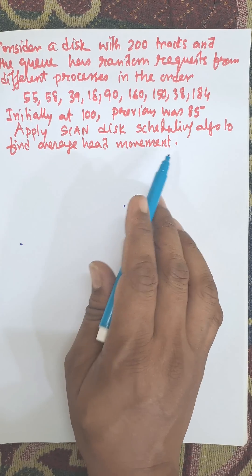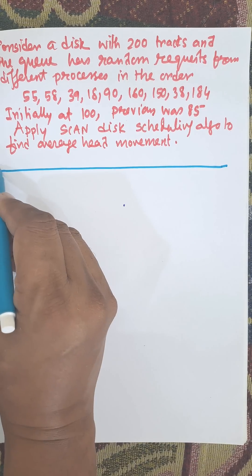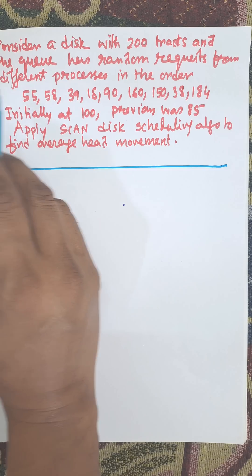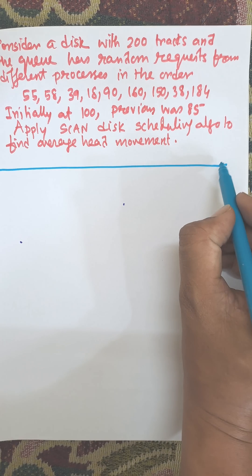First of all, we need to find the number of tracks, that is the number of cylinders. From 0 to total 200, the last one is 199.